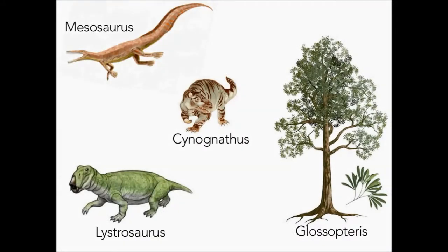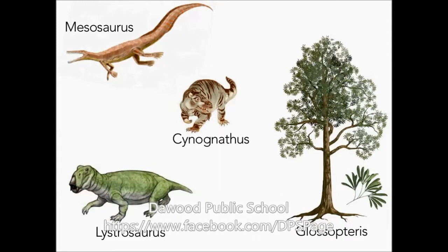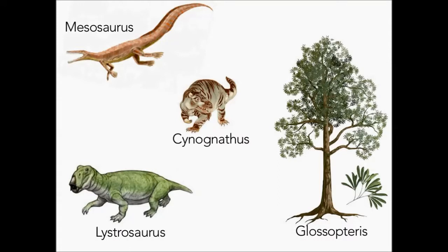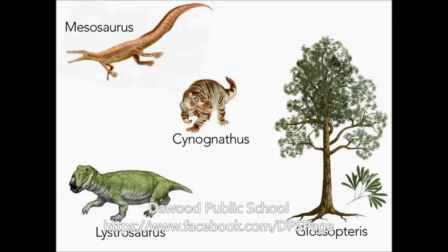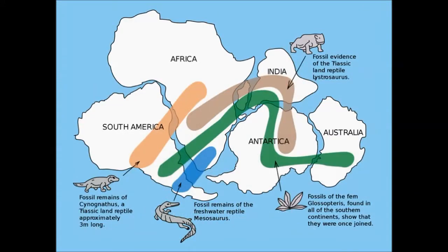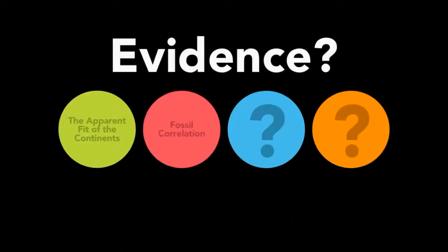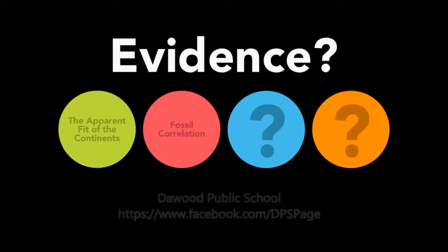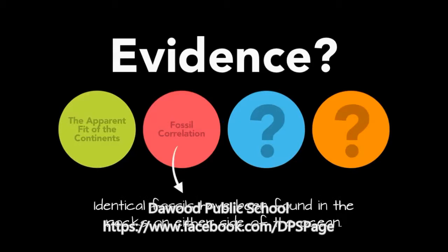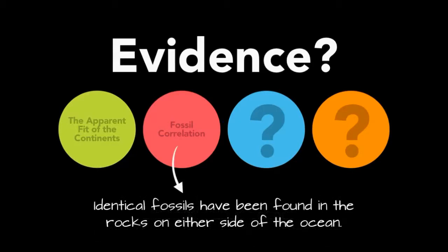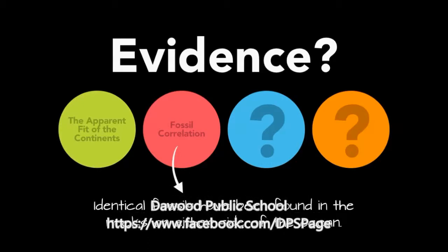Interestingly, Wegener found that other organisms from the past had similar fossil distributions — Cynognathus, Lystrosaurus, and Glossopteris being among the more notable ones. These fossils all have very unique distribution patterns that suggest the continents were once together. In fact, if you reassemble the continents and map out the locations of these fossils, they line up perfectly. That's our evidence number two — we call it fossil correlation, meaning matching up identical fossils found in the rocks on either side of the ocean, suggesting the continents were once connected and must have drifted apart.